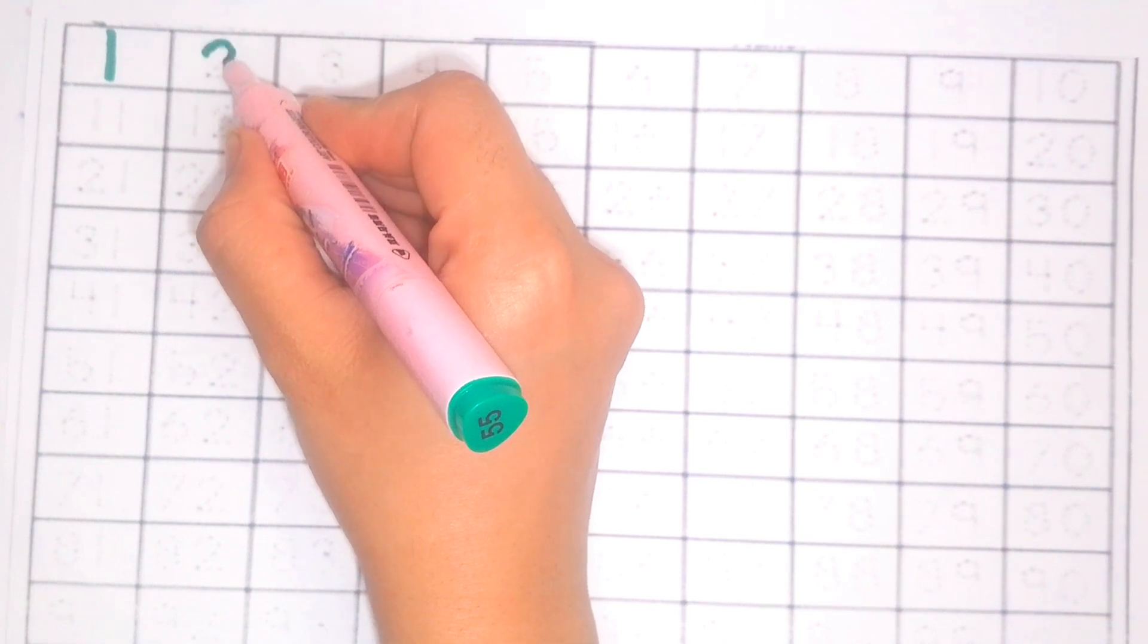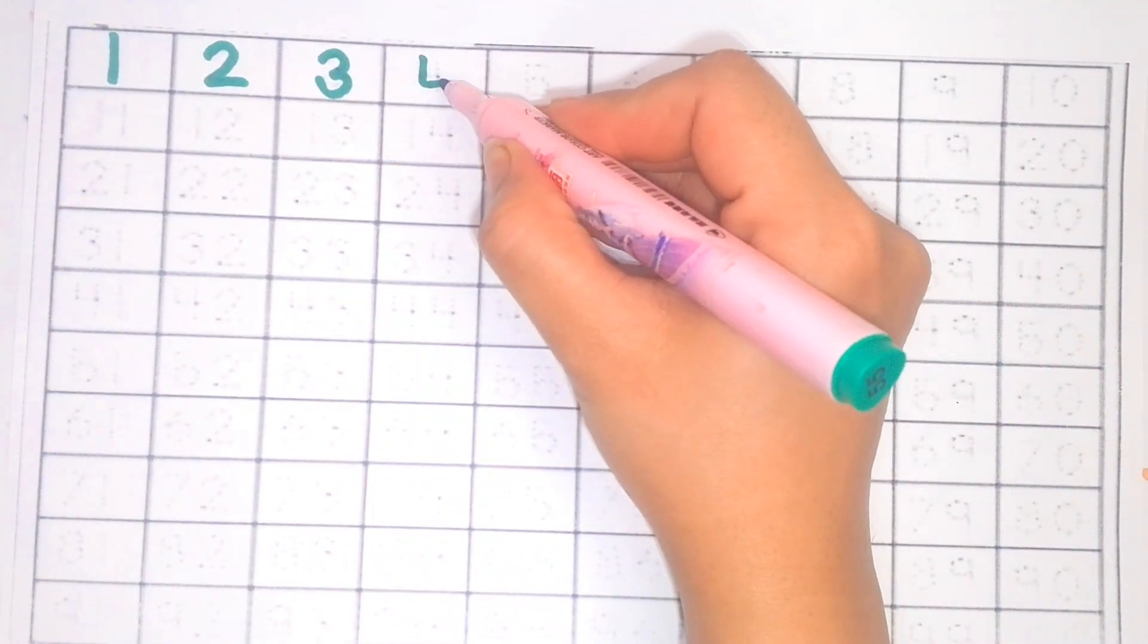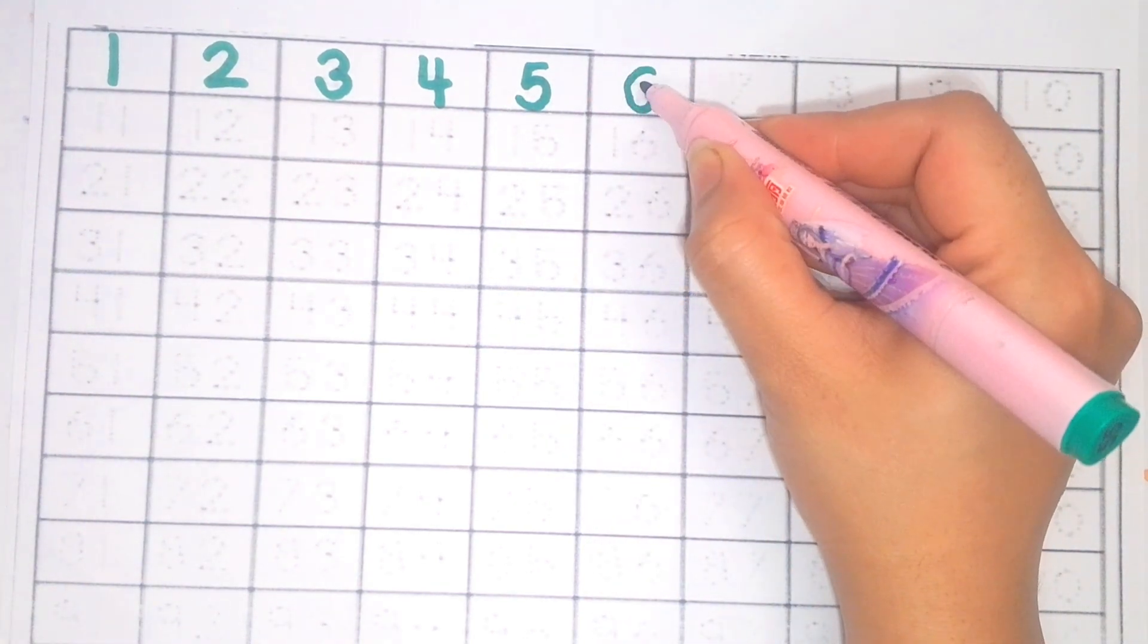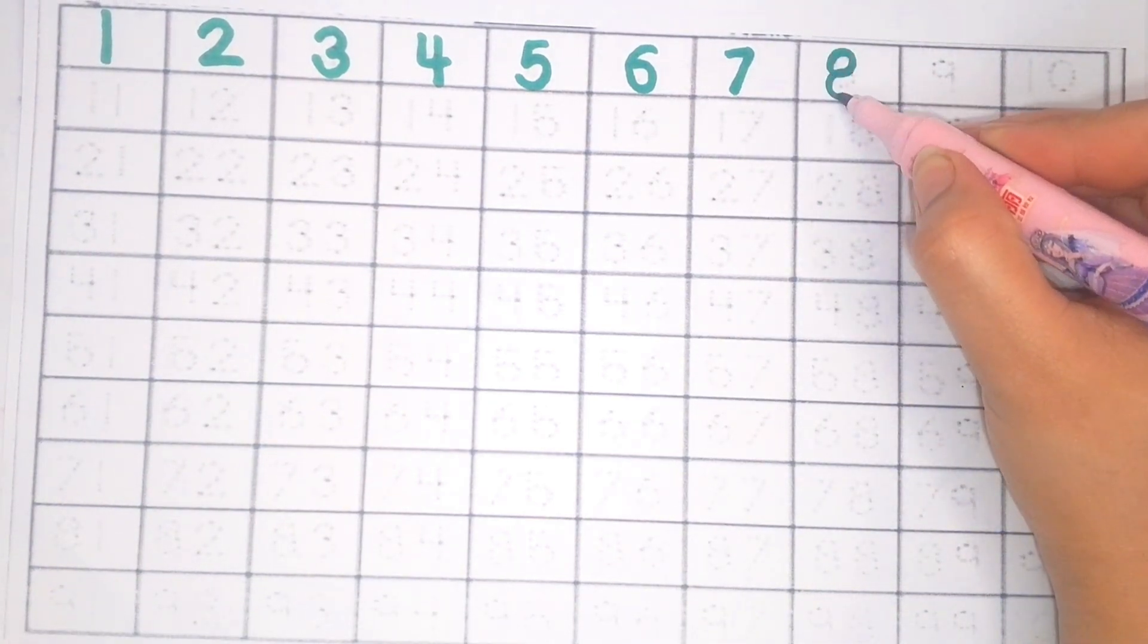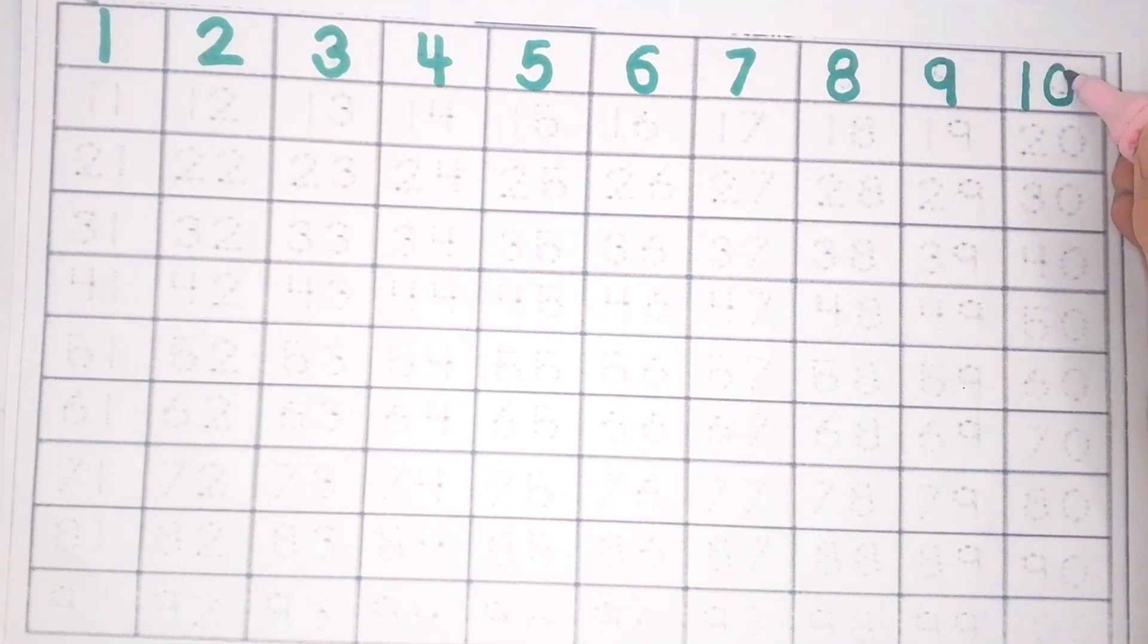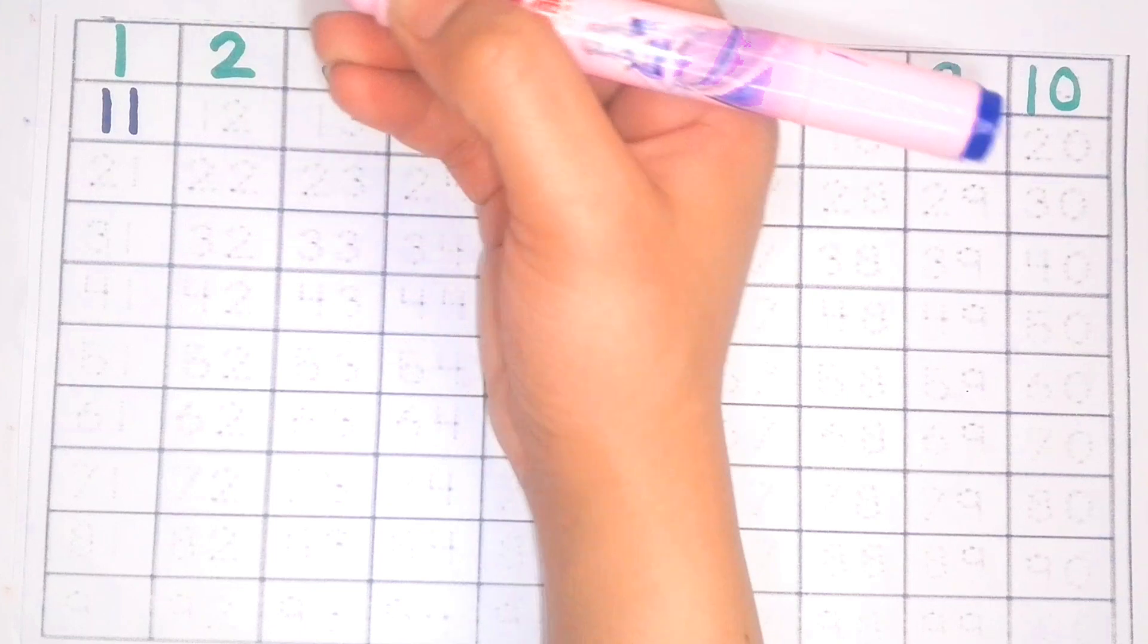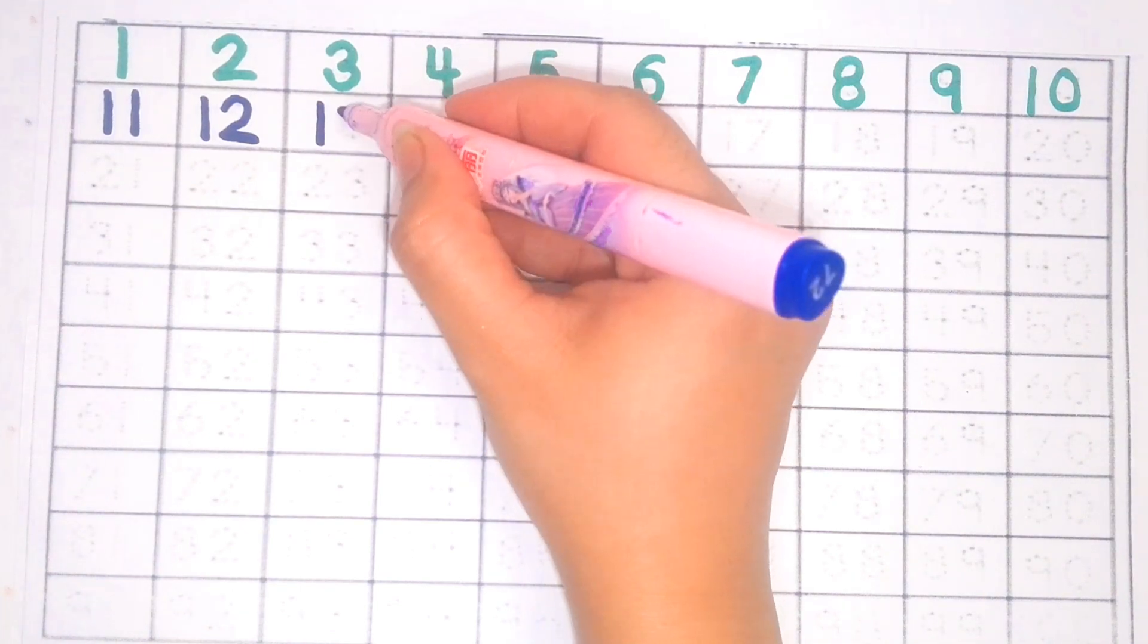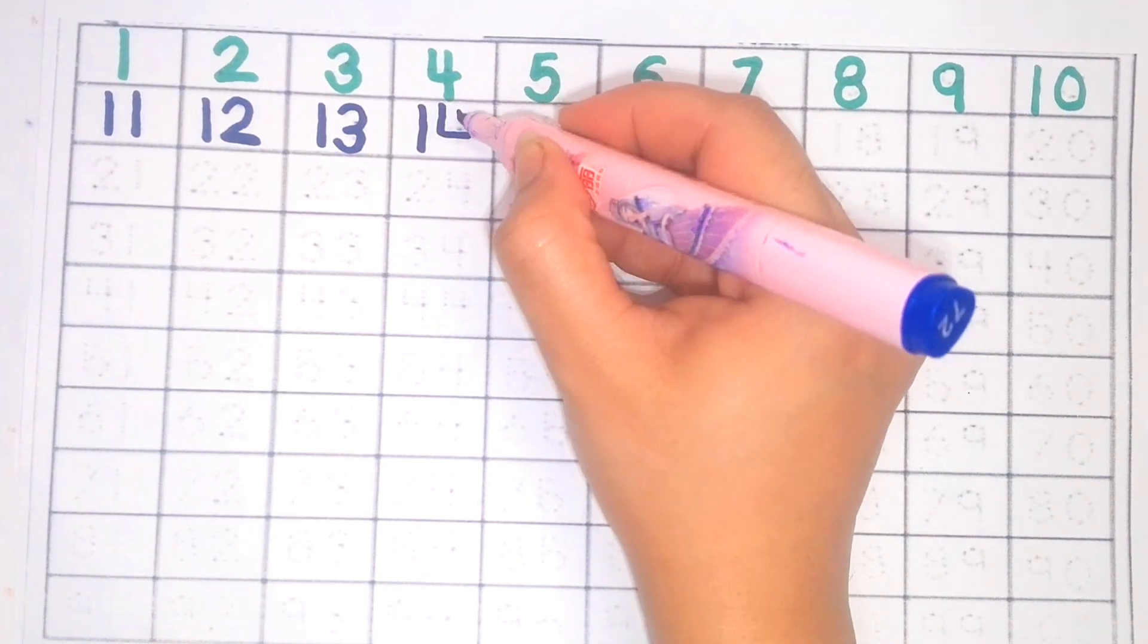Two, three, four, five, six, seven, eight, nine, one zero ten, one one eleven, one two twelve, one three thirteen, one four fourteen.